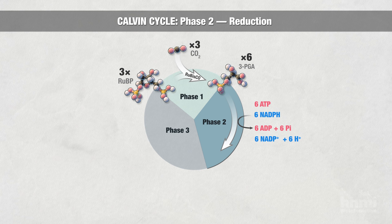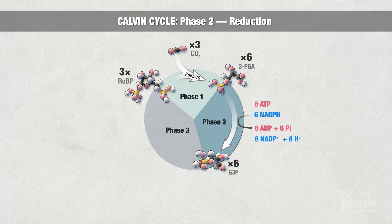The six molecules of 3PGA use six molecules of ATP and six molecules of NADPH, which store energy from the light reactions, to generate six molecules of G3P.